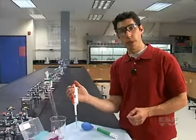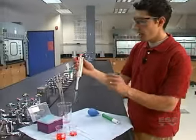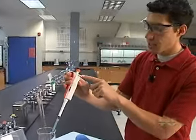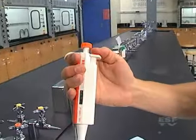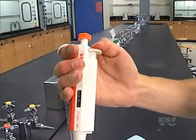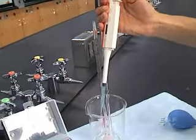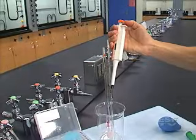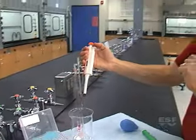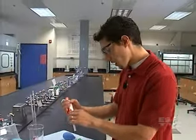When we're done with the micro pipette we need to get rid of the tip. That's done using this little dispensing lever. All you need to do is use your thumb to push down into your waste beaker, and it gets ejected from the tip — you don't need to touch it at all.